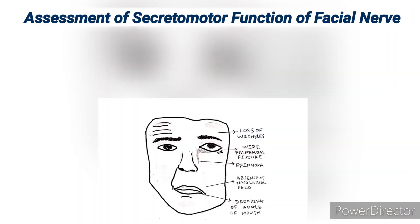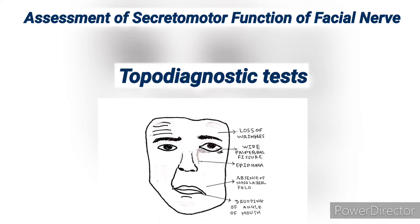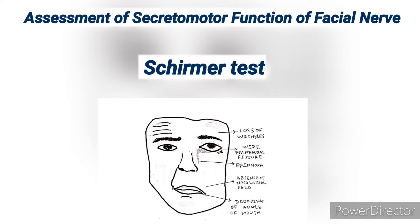For assessment of secretomotor function, we perform the topodiagnostic test. For example, Schirmer's test compares lacrimation in both eyes. A strip of filter paper is placed in the lower fornix of both eyes, and the amount of wetting is measured. On the affected side, lacrimation will be decreased.